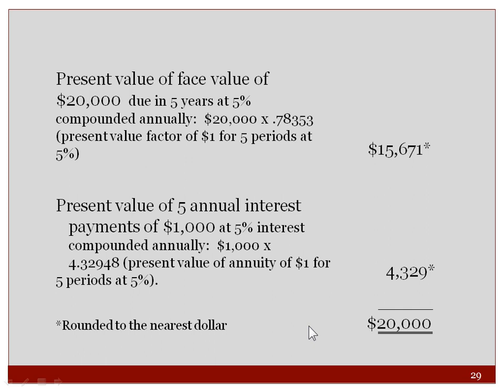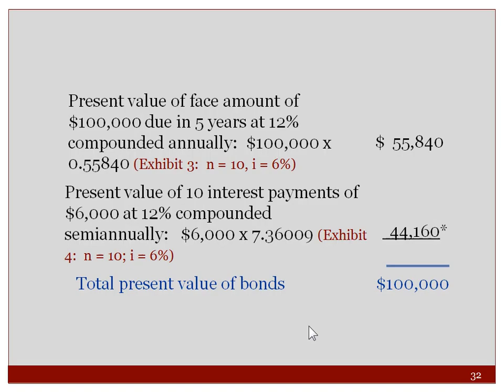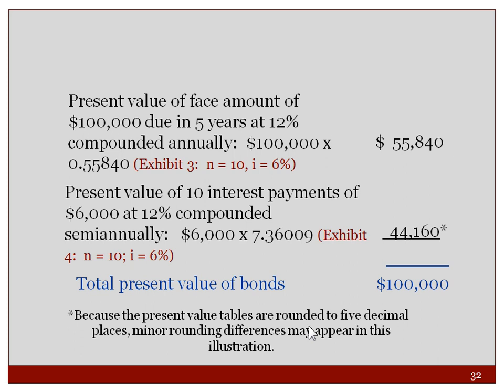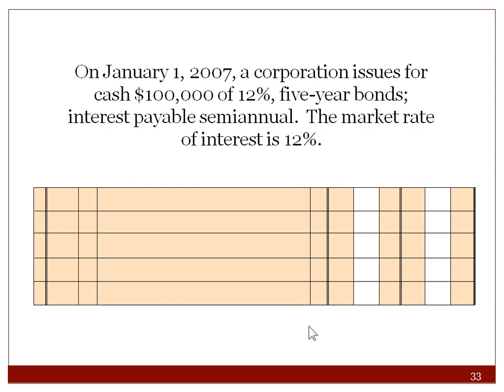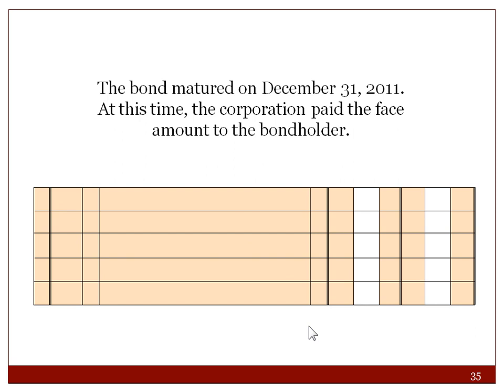Objective three: journalize entries for bonds payable. On January 1, a corporation issues $100,000 of 12%, five-year bonds for cash, interest payable semi-annually, with market rate at 12% — so market and contract rates are the same. We calculate the present value of the face amount due in five years and the present value of ten interest payments, getting the total present value. Journal entry: debit Cash $100,000, credit Bonds Payable $100,000. Interest payment of $6,000 is made. At maturity on December 31, Bonds Payable is debited and Cash is credited.